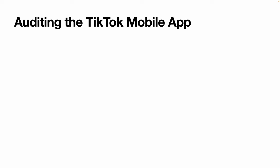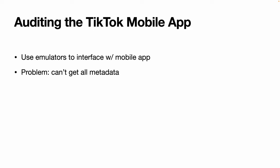In order to do this, we use Android emulators to interface with the TikTok mobile app. This allows us to get information like the number of likes, comments, and shares, the description, and the author of the posts. However, this isn't all the metadata that we might want. For example, we might be interested in the video's unique ID, the view count, or the length of the video, which is not made available on the device's screen and is only found in the video's metadata.